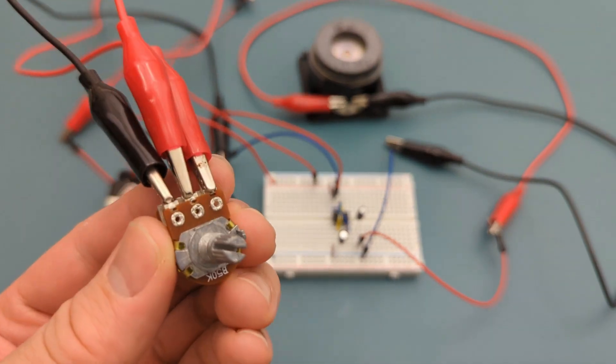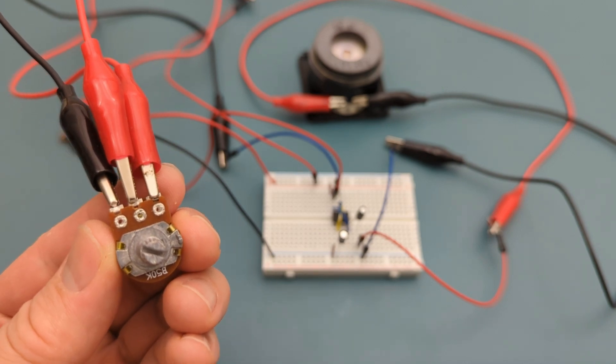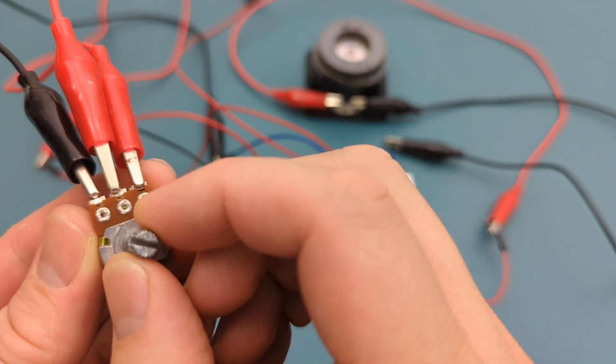Use the potentiometer to control the metronome speed. Turn the knob to the right to increase the beats per minute.